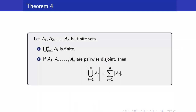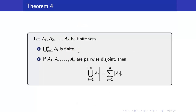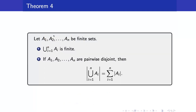For part 2, we will have the elements of the intersection counted twice, so therefore we have to subtract them. Now we want to generalize theorem 3 not just for two sets. The first result says that if you get a finite union of finite sets, it will again be finite. If they are pairwise disjoint, the cardinality of the union is just equal to the sum of the cardinalities. The proof of this is left as exercise, and the method of proof we will utilize is the principle of mathematical induction.